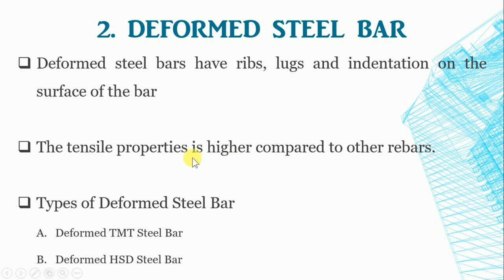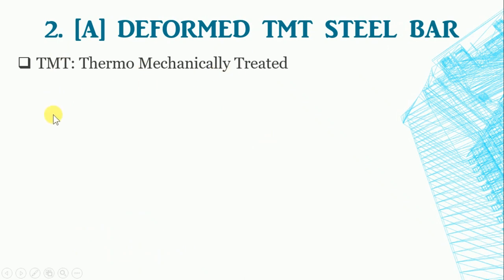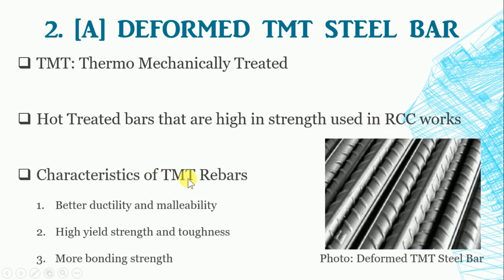These bars are classified in two types: Deformed TMT steel bars and Deformed HYST steel bars. TMT stands for Thermo-Mechanically Treated. These bars are hot-treated bars that have the highest strength and are used in reinforced concrete structures. They are the latest in MS steel bars with superior properties such as strength, ductility, welding ability, bending ability, and high quality standards at international level. Characteristics of TMT steel rebars include better ductility and malleability, high strength and toughness, more bonding strength, earthquake resistance, corrosion resistance, high thermal resistance, economical and safe in use, no loss in strength at welded joints, and ordinary electrodes are used for welding the joints.